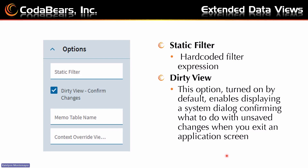We also have a Static Filter box, where you're able to hard-code filter expressions. For example, if you have two separate data views bound to the same data set but you want each to show different data, this is where you apply a static filter. So if you have the cache detail data set bound to both data views, you could set one static filter to cache detail dot is credit payment equals false, and the other to credit payment equals true, so that different data shows on each data view. Then there's the Dirty View Confirm Changes checkbox — once turned on, it enables a system dialogue confirming what you want to do with unsafe changes. It's on by default, but it's an option if you don't want those dialogue boxes.